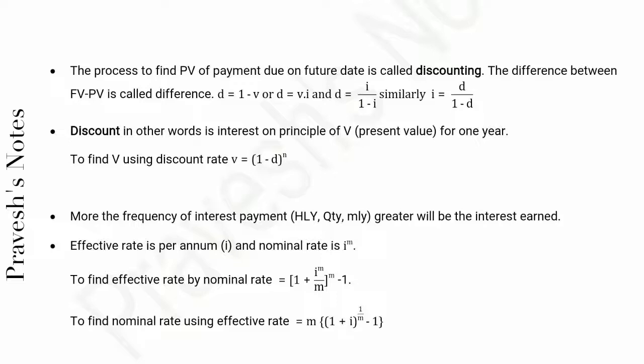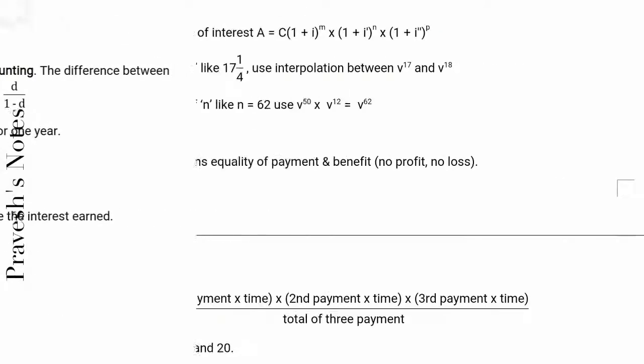Effective rate is per annum (i) and nominal rate is i^(m). To find effective rate by nominal rate: i = (1 + i^(m)/m)^m - 1. To find nominal rate using effective rate: i^(m) = m[(1 + i)^(1/m) - 1].